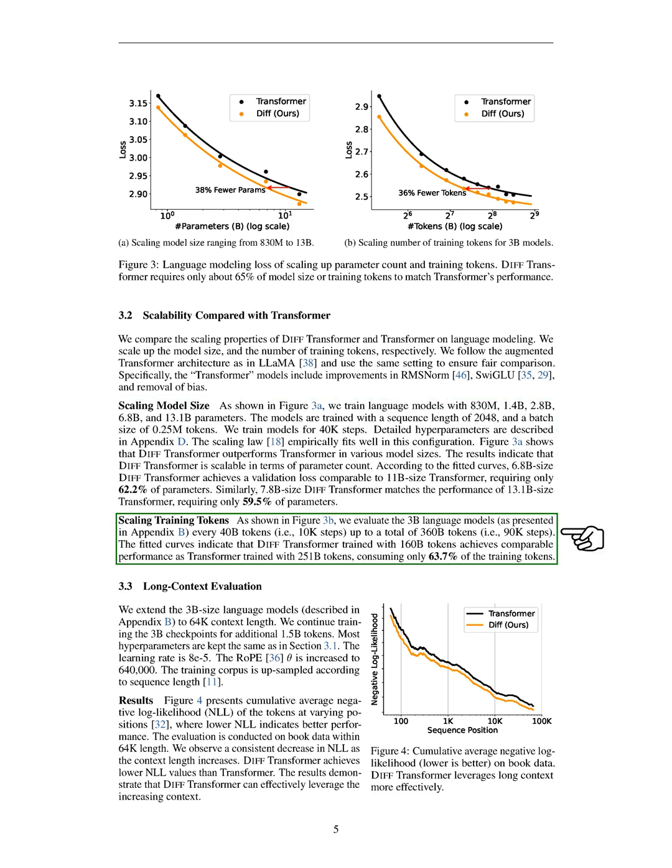When scaling training tokens, we evaluate 3 billion parameter models every 40 billion tokens, up to a total of 360 billion tokens. The results indicate that the DIFF transformer trained with 160 billion tokens performs comparably to the transformer trained with 251 billion tokens, using only 63.7% of the training tokens. For long context evaluation, we extend the 3 billion parameter models to a context length of 64,000. We continue training these models for an additional 1.5 billion tokens, keeping most hyperparameters the same. Our results show that as the context length increases, the negative log likelihood, NLL, decreases, indicating better performance. DIFF transformer consistently achieves lower NLL values than transformer, demonstrating its ability to effectively utilize longer contexts.